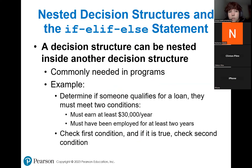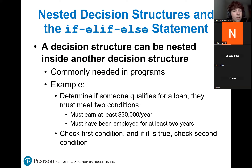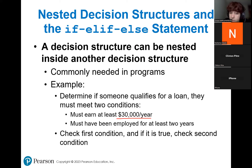You can also do nested decision structures, which just means adding more conditions. Instead of just if and else, you can do elif, which stands for else-if. You're providing your code with another way to check a condition. For example, to determine if someone qualifies for a loan, they must meet two conditions: earn at least $30,000 a year, and must have been employed for at least two years. We check the first condition first, and if it's true, we check the second.